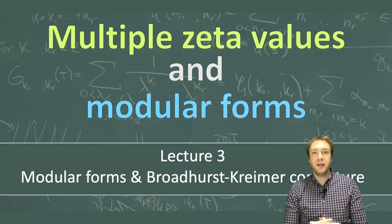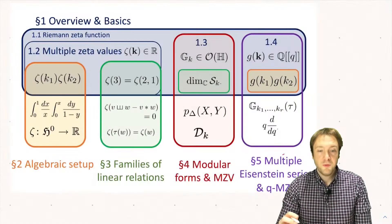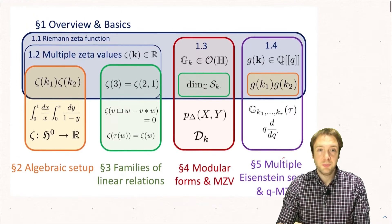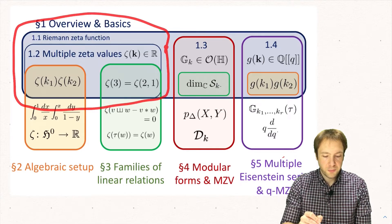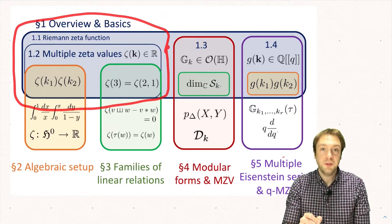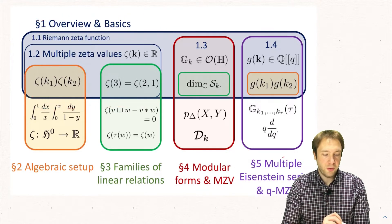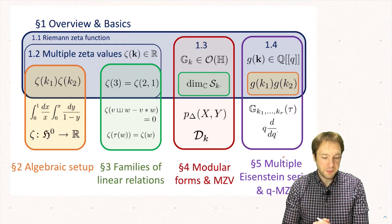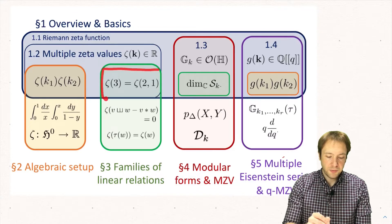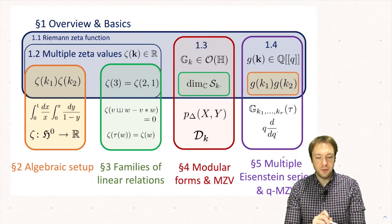Hey students, welcome to this third lecture of multiple zeta values and modular forms. Before we start I want to recall a little bit what we did last time. Last time we did section 1.2 where we talked about multiple zeta values and discussed that there are two ways to evaluate the product of two Riemann zeta values and write it in terms of double zeta values. We also proved some linear relations among these numbers.